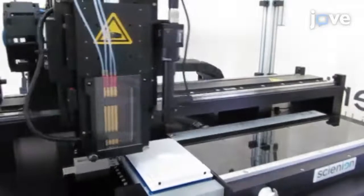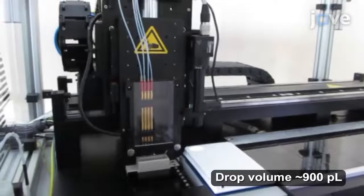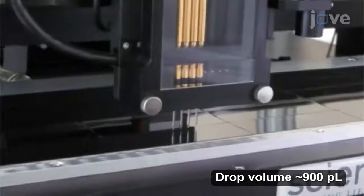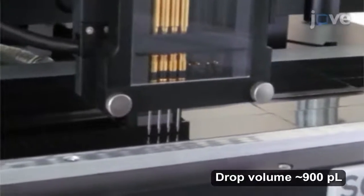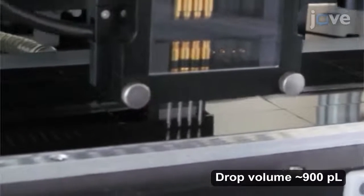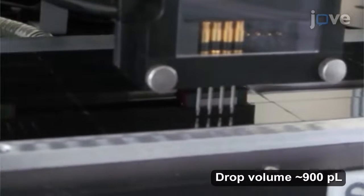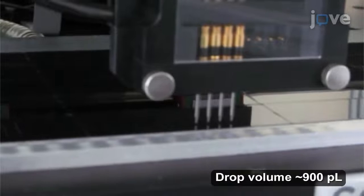To prepare the microarray, use a non-contact robotic arrayer. Print six replicates of 50 mM glycans and 10 mcg per mL polysaccharides in 300 mM PBS pH 8.5 onto N-hydroxy-succinimide-derivatized glass slides.